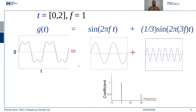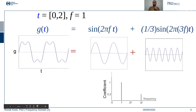A concrete example: here we have a signal g(t) which can be represented as a combination of two sinusoidal waves — one with frequency f and another with frequency 3f. When you combine both, you can represent the original function. Looking at the coefficients, they represent the intensity of each sinusoidal component: the first component has amplitude 1, and the second component with frequency 3f has amplitude 1/3. This is the coefficient profile for representing the given function.